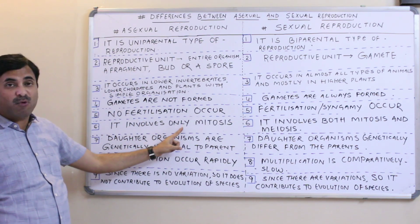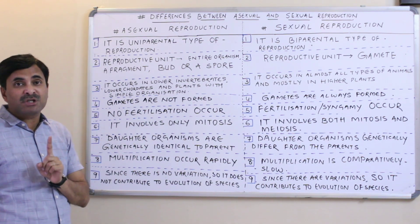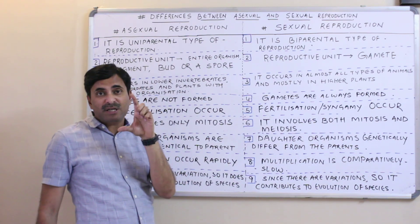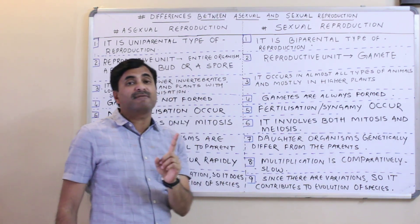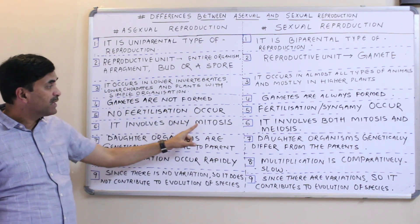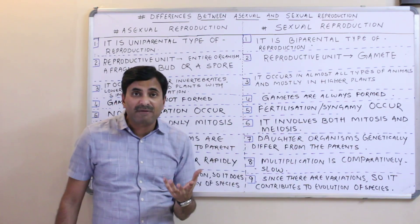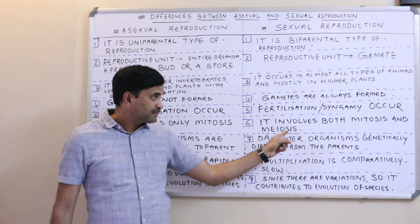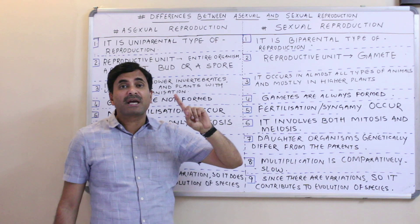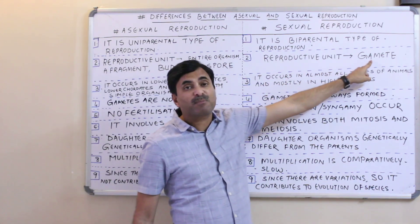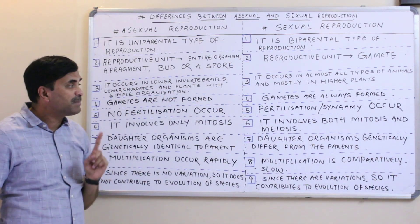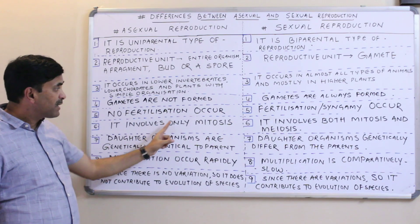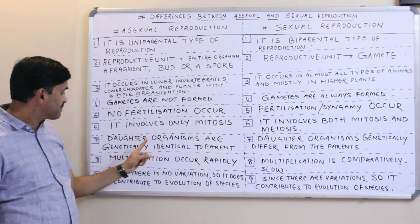In asexual reproduction, only mitosis is involved. Mitosis is a type of division in which the daughter organisms produced are qualitatively as well as quantitatively similar to the parents. Sexual reproduction involves both mitosis and meiosis. Meiosis is used at the time of gamete formation, because gametes are haploid cells formed through meiosis.